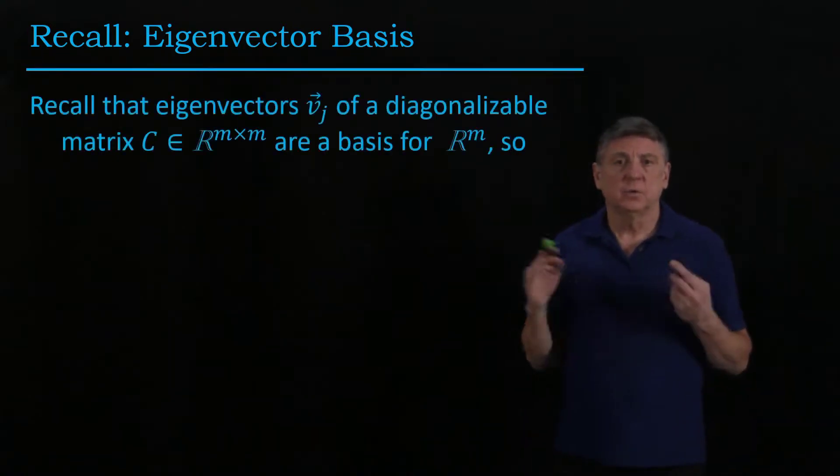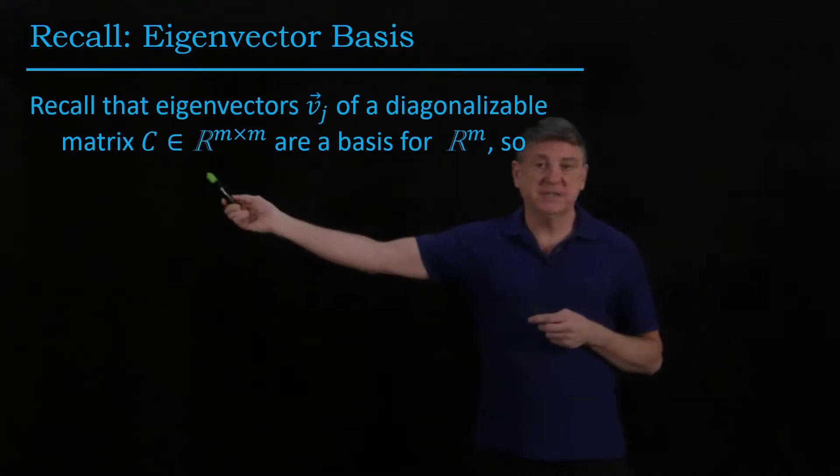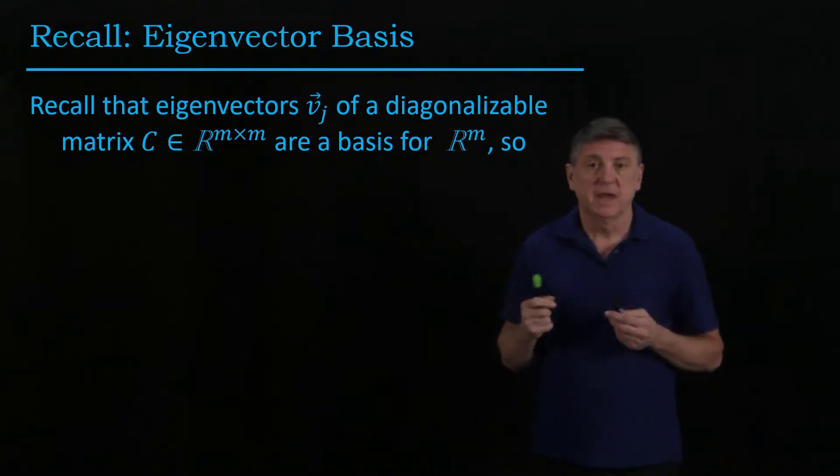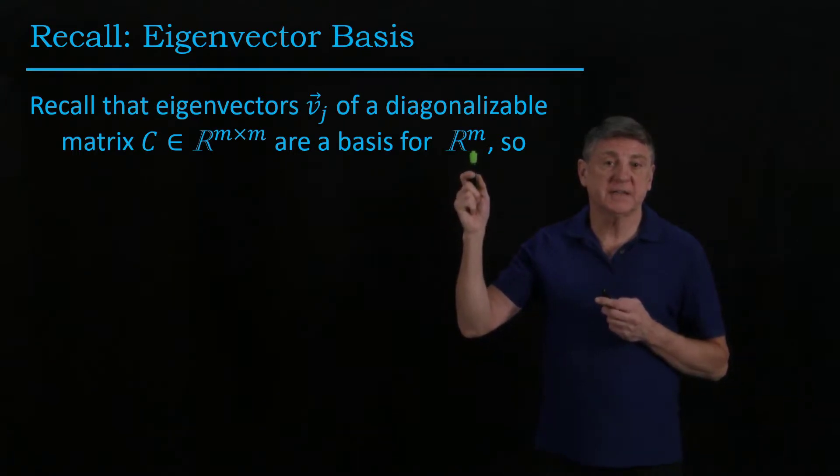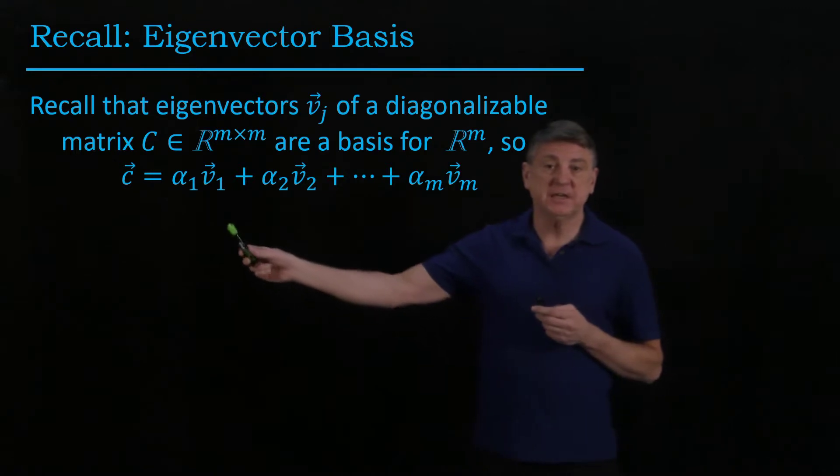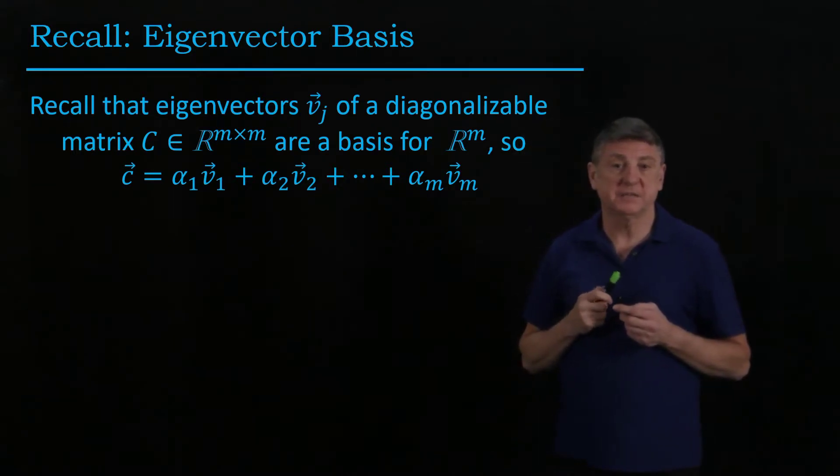Let's recall that suppose our matrix C is square and also suppose that it's diagonalizable. That means that the eigenvectors are a basis for the coordinate space that has m entries, and that means that we can write any vector C as a linear combination of these basis vectors.